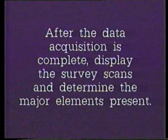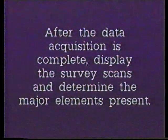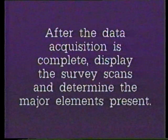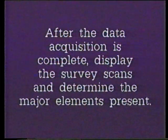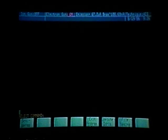When the acquisition is complete, we notice two things on the TV: we no longer see an indication of any of the areas — area 1, 2, or 3 — and on the terminal we see that we have returned to the home bank. Now that data acquisition is complete, we need to display those survey scans and determine what major elements are present on areas 1, 2, and 3. To do that, we can use function key number 16, which will display our last acquisition — our survey scans.